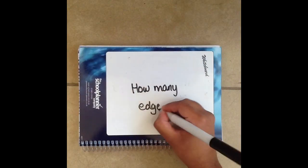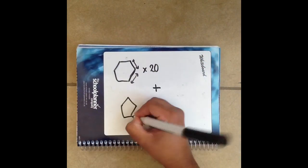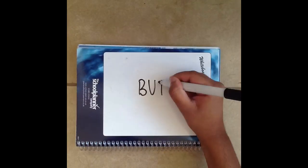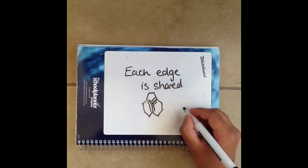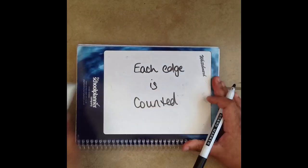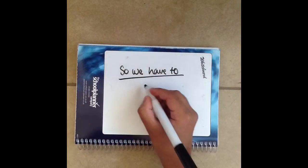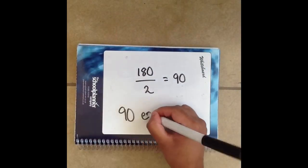How many edges are there? There are 20 hexagon faces and 12 pentagon faces so that gives us a total of 180 edges. But each edge is shared so each edge is counted twice. Therefore we have to divide the number of edges by 2 and that gives us 90 edges.